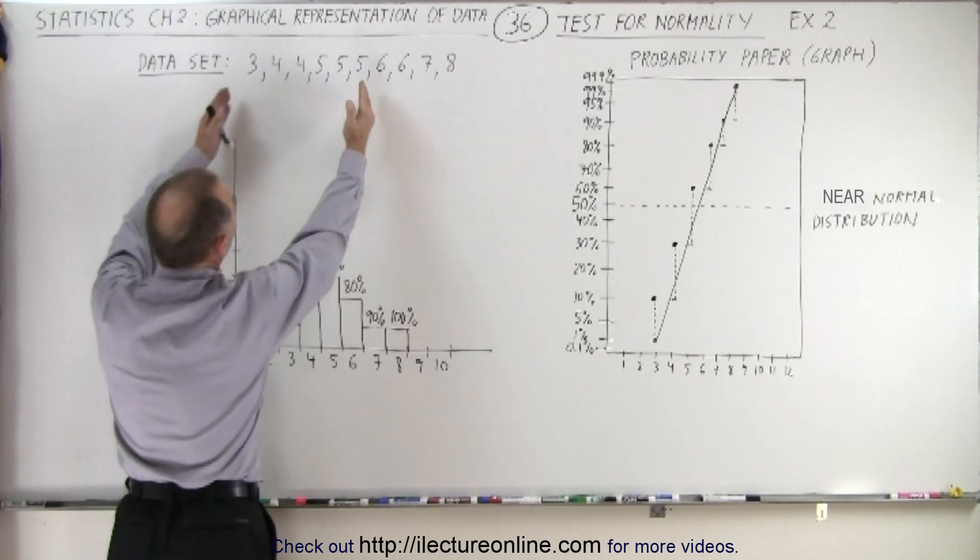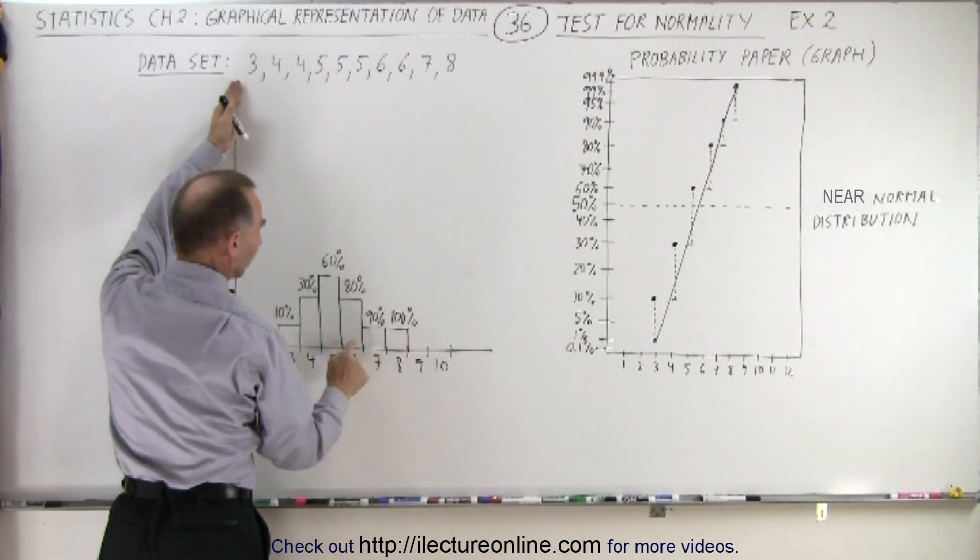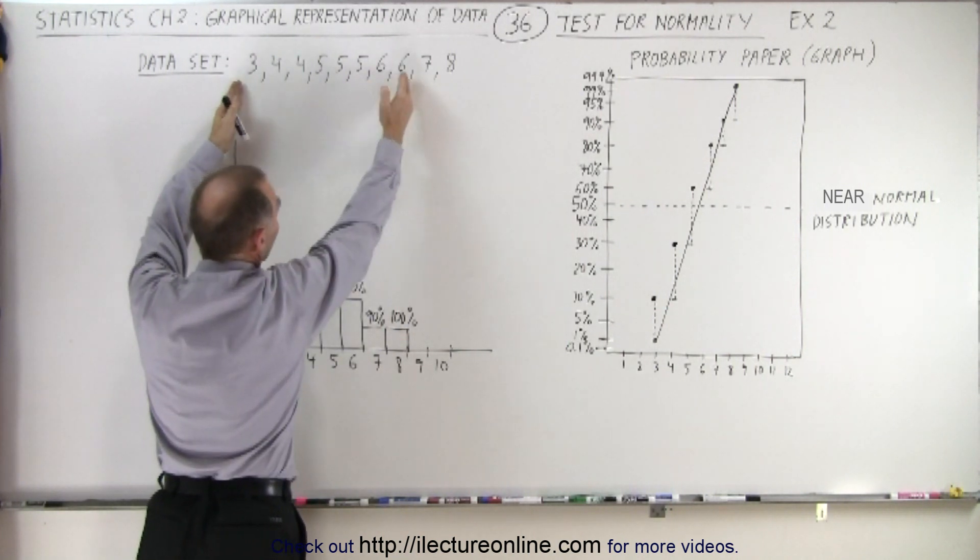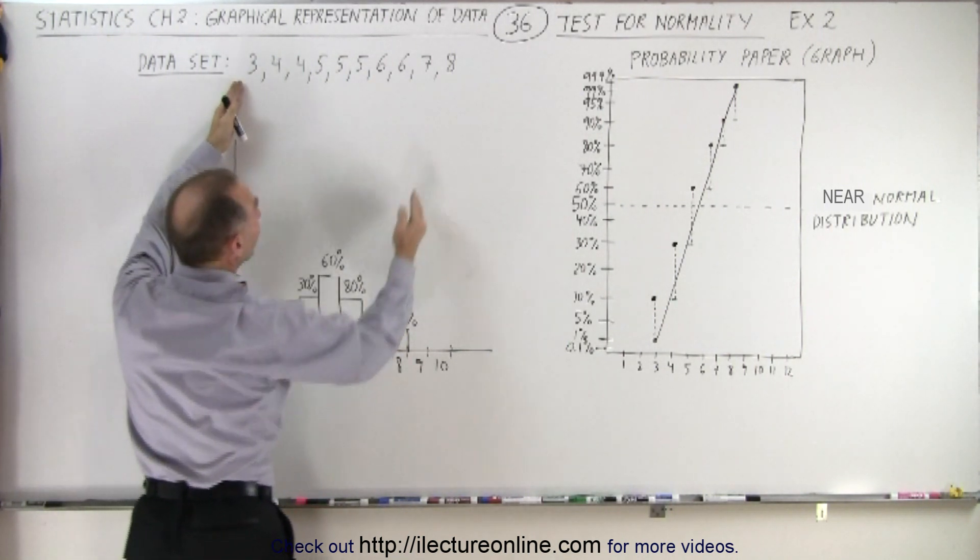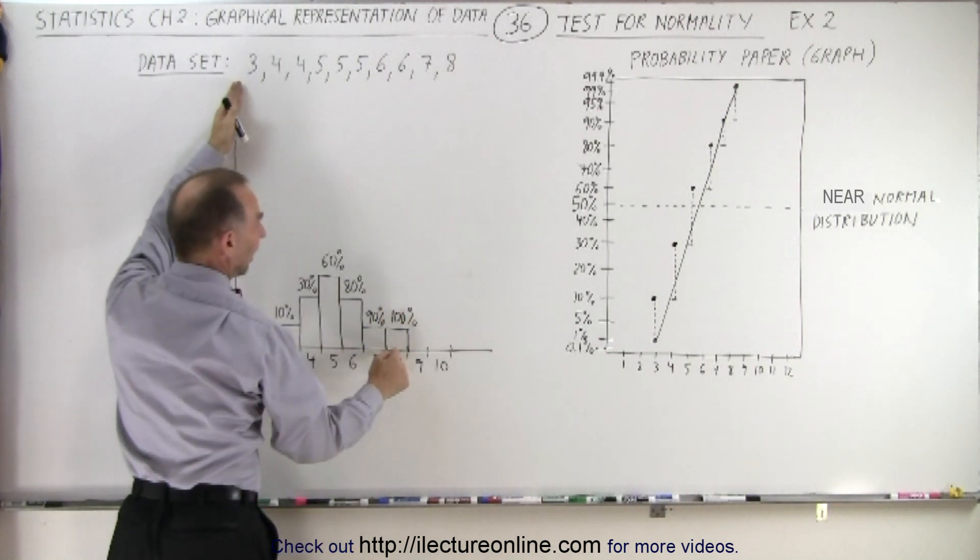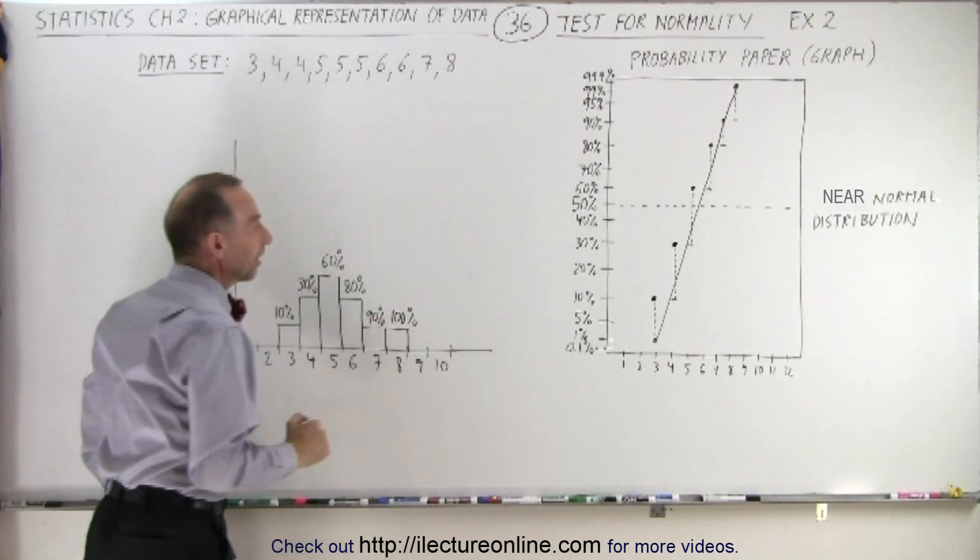The 5 occurs 3 times, giving you 60%. The 6 occurs twice, giving you 80%. The 7 occurs once, giving you 90%. And the 8 occurs once, giving you 100% of the data set.